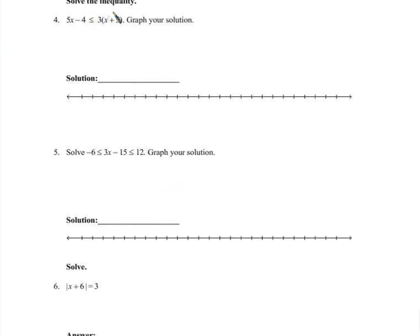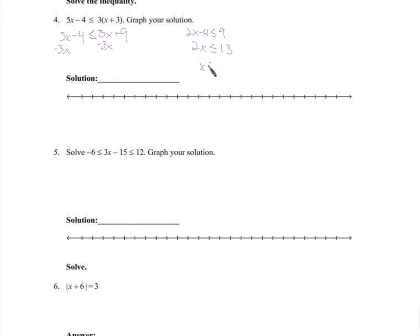To start here, you've got 3 times a parenthesis — to deal with that we use the distributive property: 3x plus 9. Careful, make sure you distribute to get 9. Then 5x minus 4. We'll subtract 3x from both sides: 2x minus 4 is less than or equal to 9. Add 4 to both sides: 2x is less than or equal to 13. Divide by 2: x is less than or equal to 13/2, which is 6.5. That decimal is exactly right — 6.5 is the same as 13 over 2.